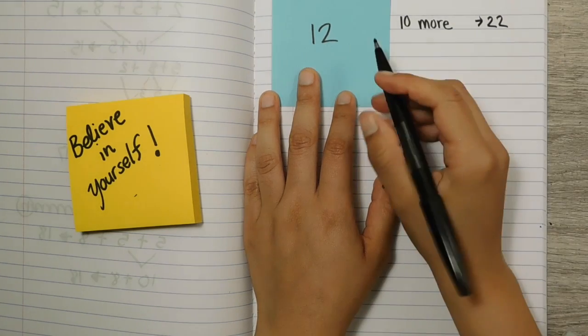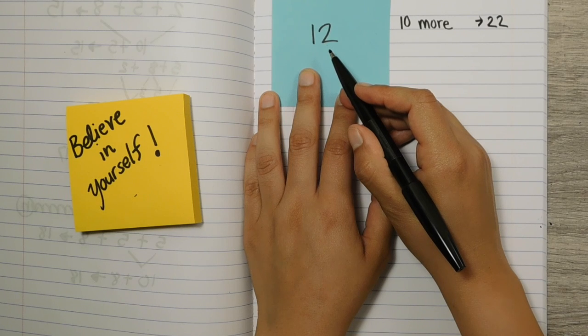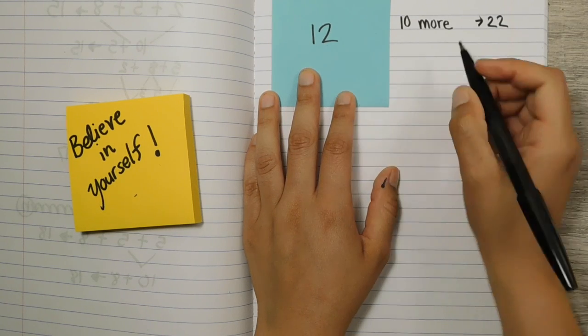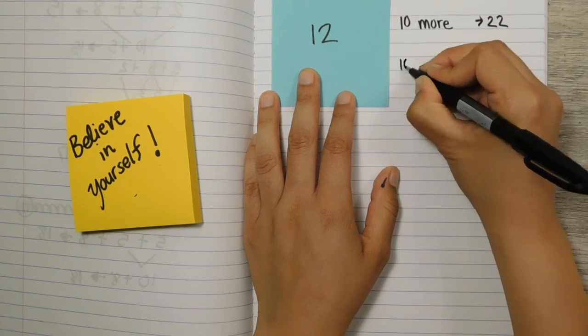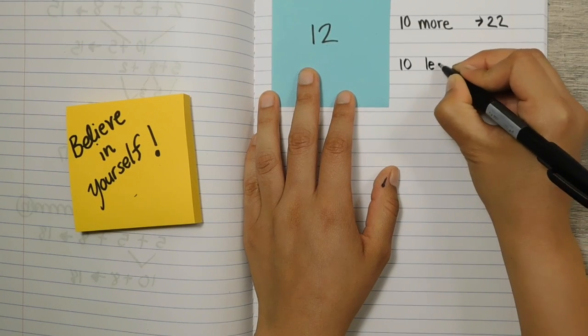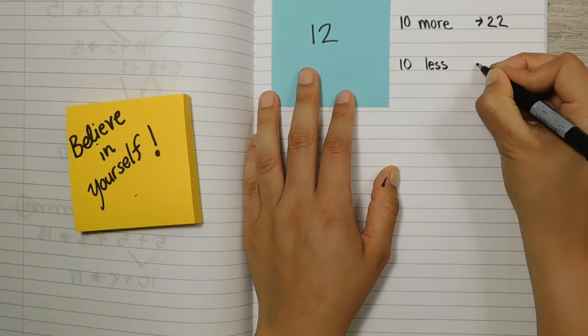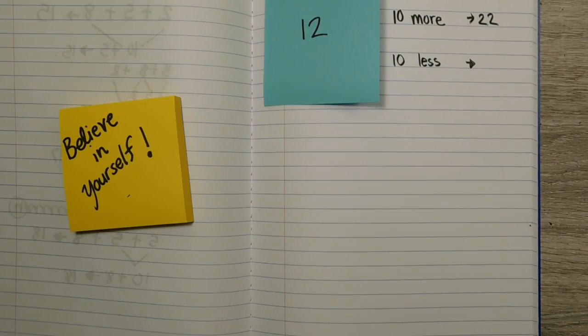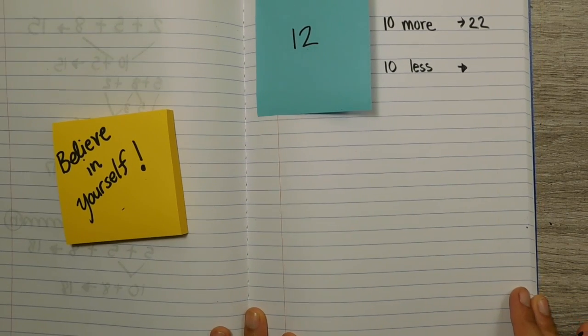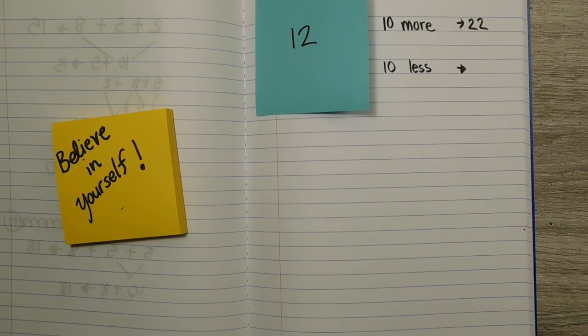Okay, so let's take that number 12 again and I'm going to give you a bit more time this go around to think what would be 10 less. Ready? A few more seconds compared to last time, thinking in your head, what would be 10 less? Think. Think. For the number 12, 10 more was 22, but this time think, what would be 10 less?